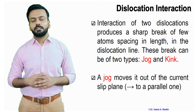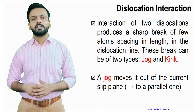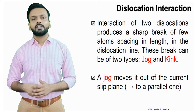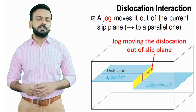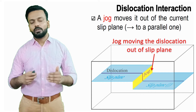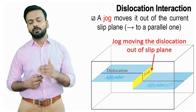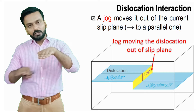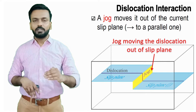What happens in a jog? A jog moves the dislocation out of the current slip plane to a parallel plane. As you can see in this image, a jog will move the dislocation line from the current slip plane to a parallel one. One plane is on top, and the dislocation interacts from the top and is taken to another plane that is parallel to the above plane but out of the current one. That is a jog.